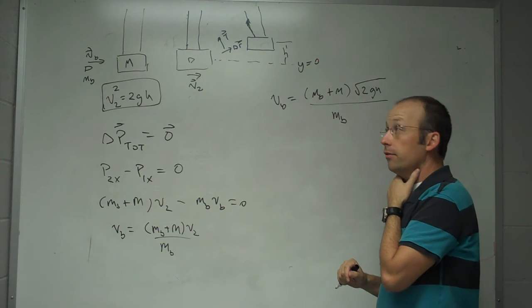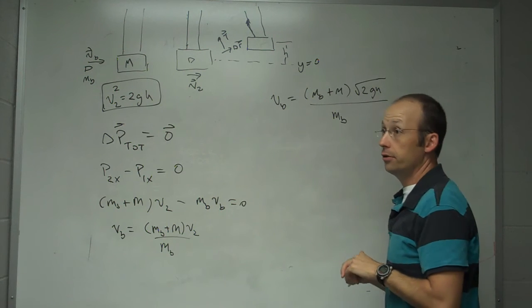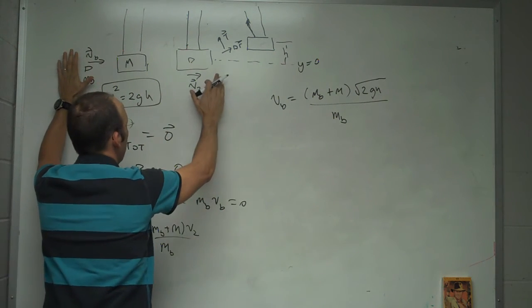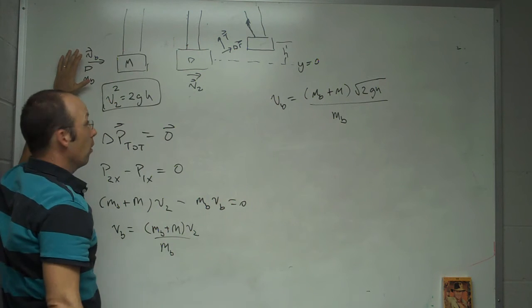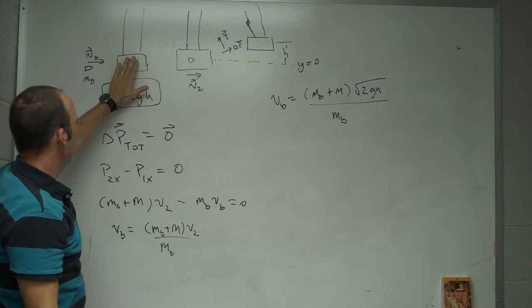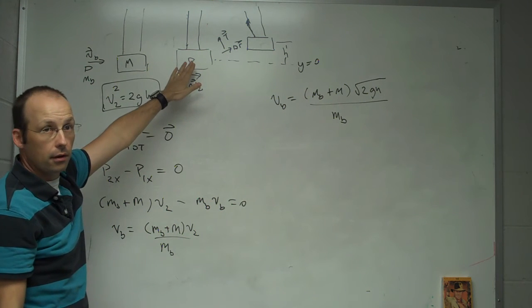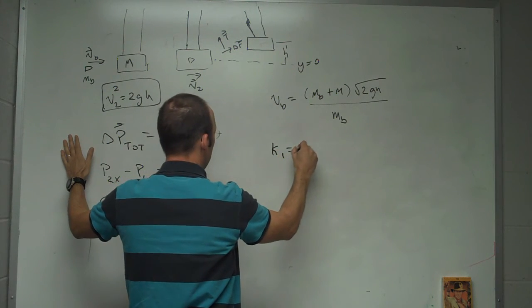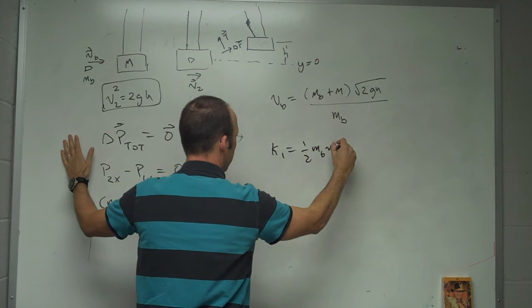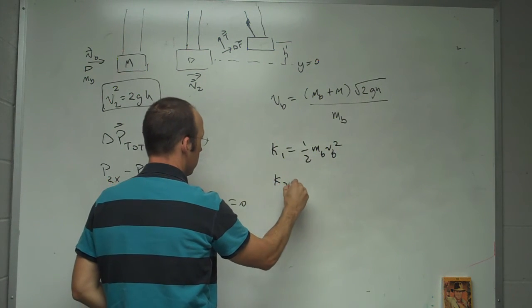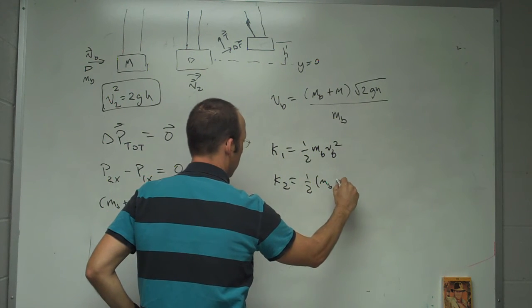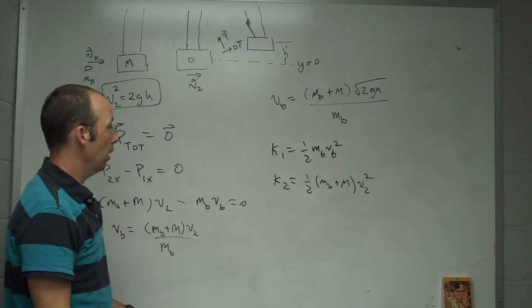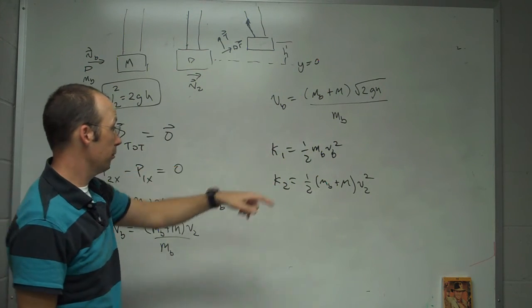One more question. What about the increase in thermal energy of the block? Does the block increase in thermal energy? Well, let's just look. So, look at this and this. So before, what's the energy of the system? Well, this is moving, so there's kinetic energy, and this doesn't. Afterwards, they're both moving. So, do they have the same kinetic energy before and after? So, let's call this k1, 1 half m bullet v bullet squared. And then k2 is going to be 1 half m bullet plus m v2 squared. Are they the same?